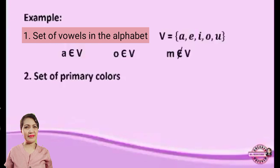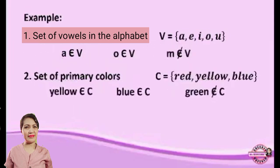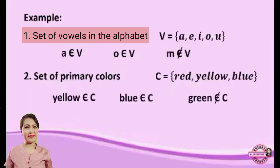Next, set of primary colors. So for set C, we have red, yellow, and blue. Yellow is an element of C. Blue is an element of C. But green is not an element of C.